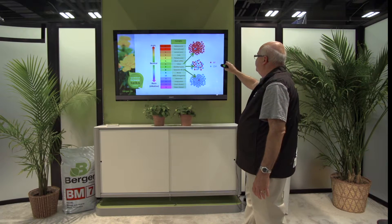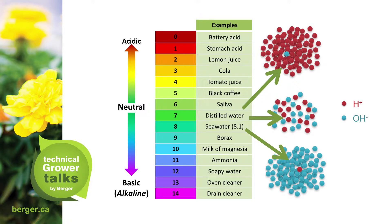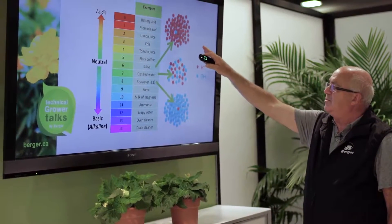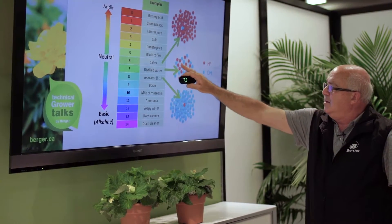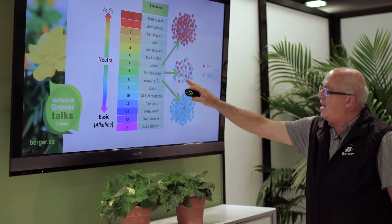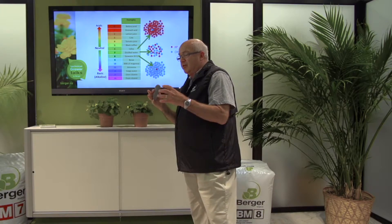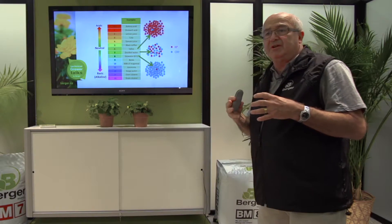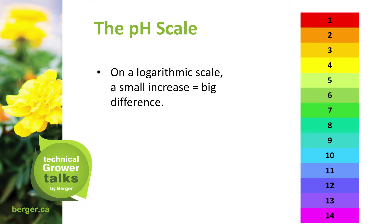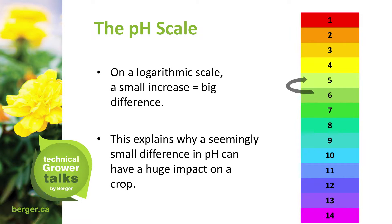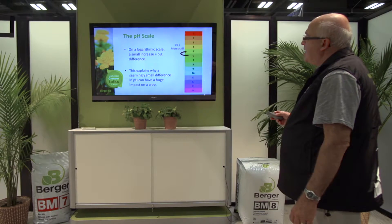Using little red dots representing hydrogen ions, you can see the high concentration of hydrogen. You can see the high concentration of hydroxyl when the pH is high. In the middle, we pretty well have both hydrogen and hydroxyl sharing the same number — that's why it's considered neutral. On a logarithmic scale, a small increase equals a big difference. This explains why seemingly small differences in pH can have a huge impact on the crop. One drop, as you can see, is ten times more acidic.